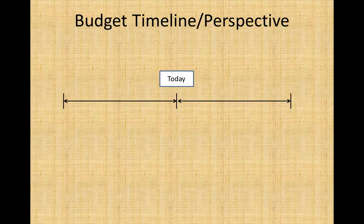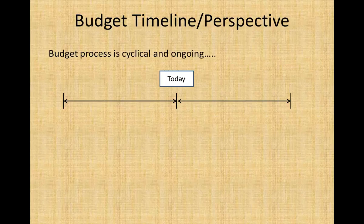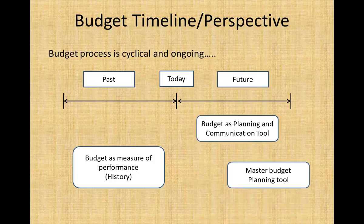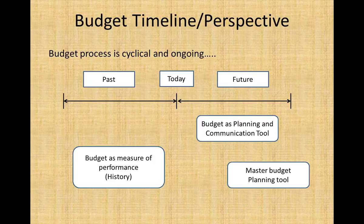The budgeting process is ongoing. We use budgets to evaluate performance against a predicted budget, which would be a past view and therefore a measure of performance based on the firm's history. We also use budgets as a forward-looking tool to help us in planning and to optimize financial resources to meet sales goals within company restraints. The Master Budget is a significant forward-looking planning tool.